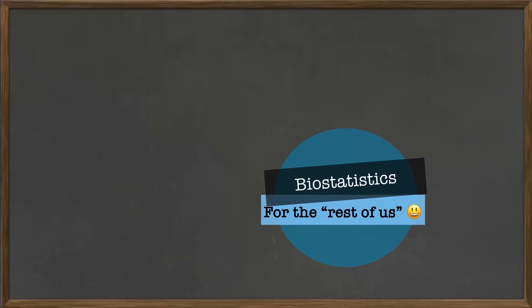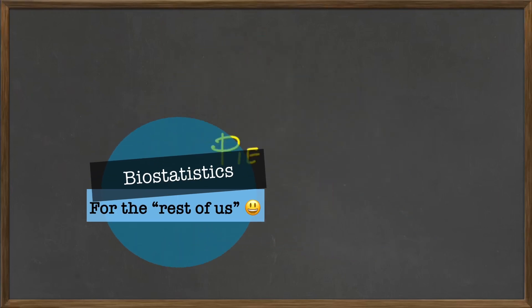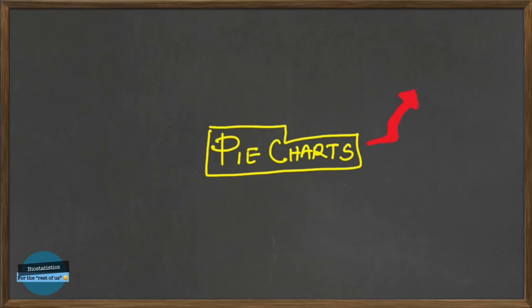Hi and welcome. Today we are going to be talking about pie charts. A pie chart is a circle divided into sectors such that the areas of the sectors are proportional to the frequencies of the values of a variable.